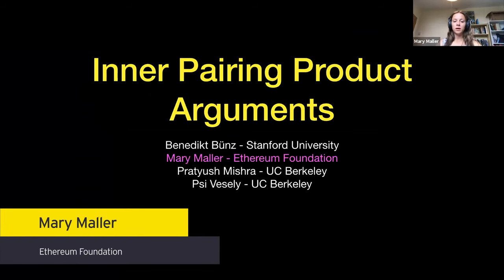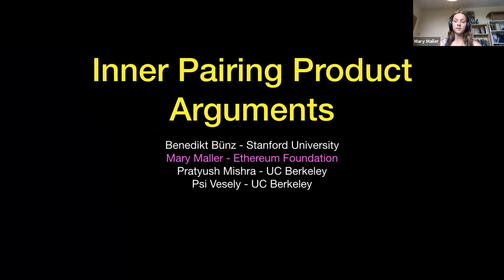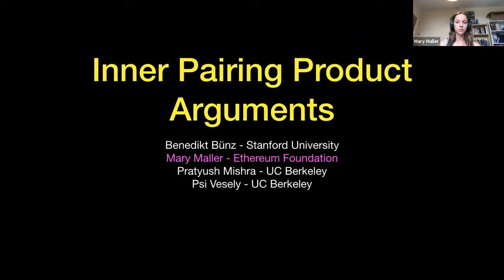Today I'm going to be talking about work we've been doing, which we've called Inner Pairing Product Arguments. The general idea is that we want to be able to aggregate lots of data in a way that is very efficient to verify, and also maybe a bit quicker for the actual person who's doing the aggregating than your usual SNARK solution. I'll spend the first part motivating this aggregator — where it would be useful, what are the pros, what are the downsides.